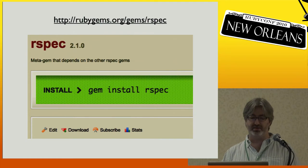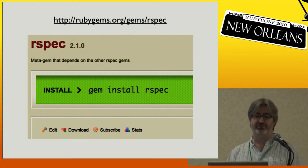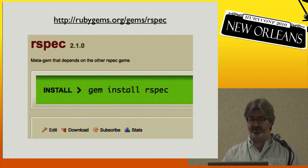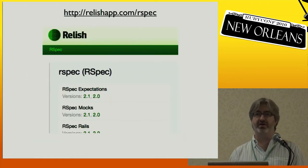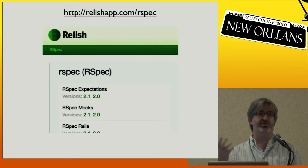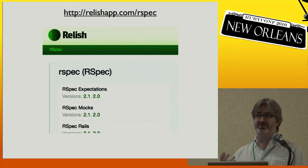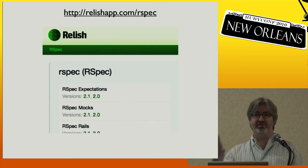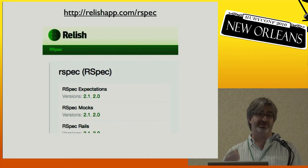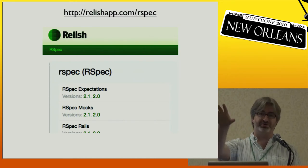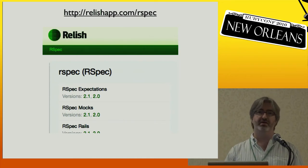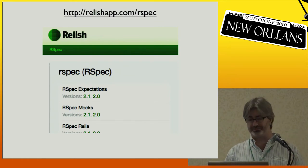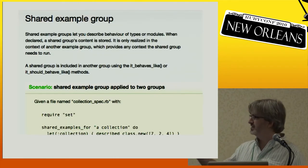I maintain the RSpec project, recently released version 2.1. With the 2.0 release, the new thing we got going is all these Cucumber features are being displayed on a website called Relish. It's a beautiful presentation of all the documentation of the code, which is actually executed before we push it up there. You can't run it on the site, but all of the documentation is actually executed against the code base. And it looks like that — it's beautiful, isn't it?